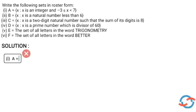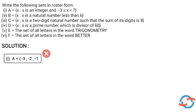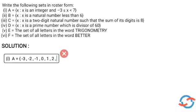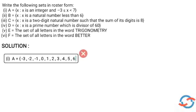A is equal to the set of all: minus 3, minus 2, minus 1, 0, 1, 2, 3, 4, 5, 6. So A equals {-3, -2, -1, 0, 1, 2, 3, 4, 5, 6}.